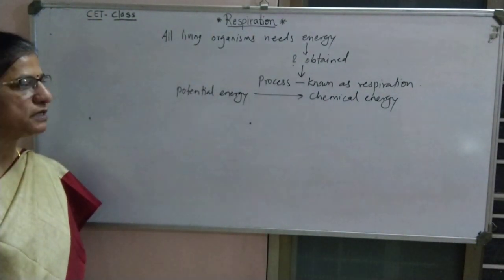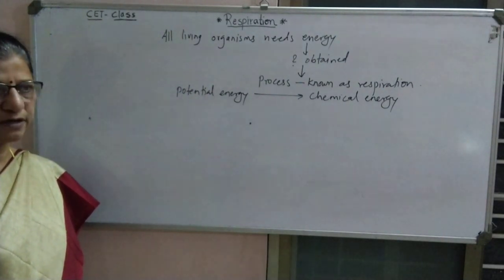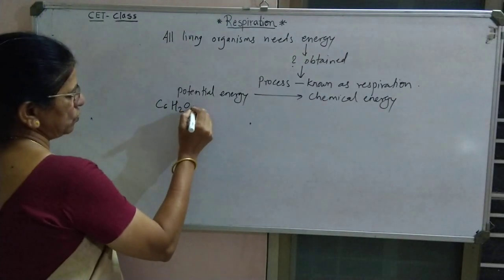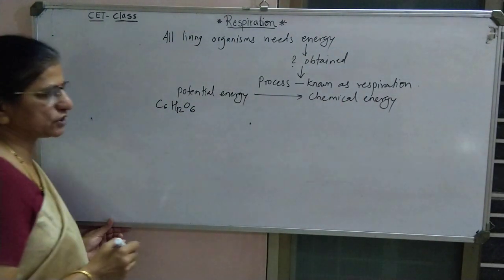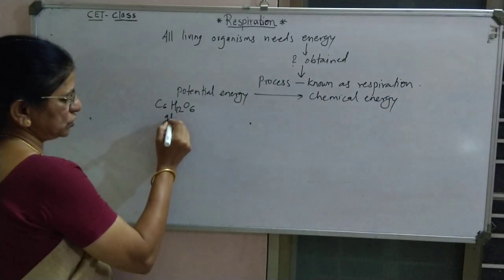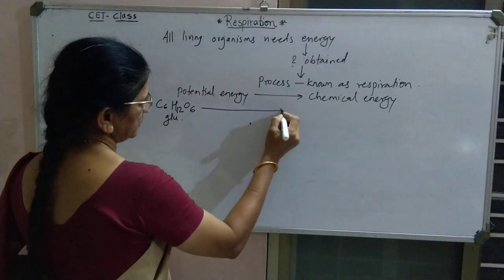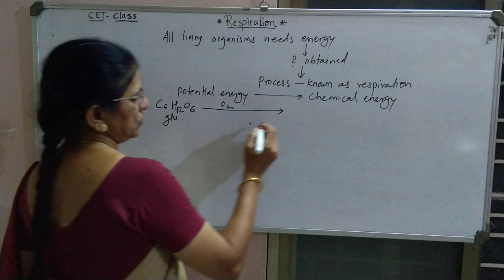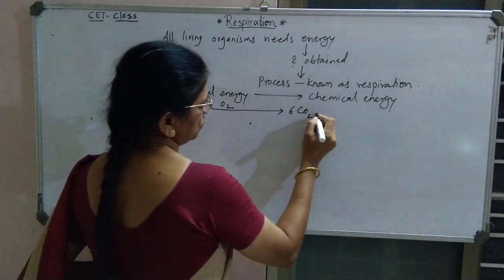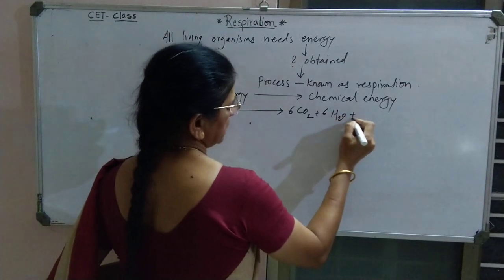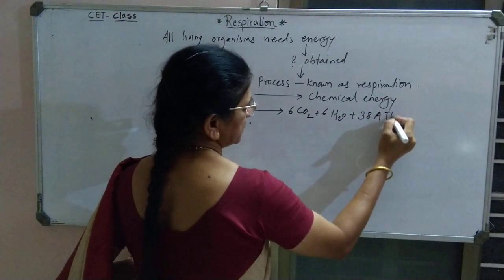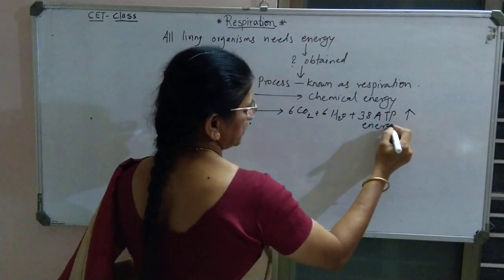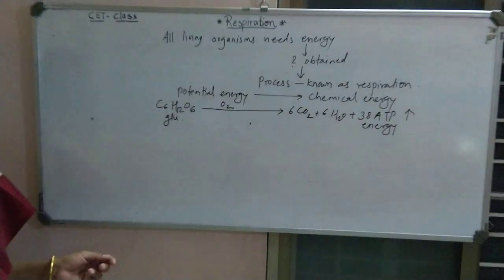The potential food is nothing but the organic food. For example, C6H12O6 — that means glucose is oxidized to 6CO2 plus 6H2O, and 38 ATP is released.